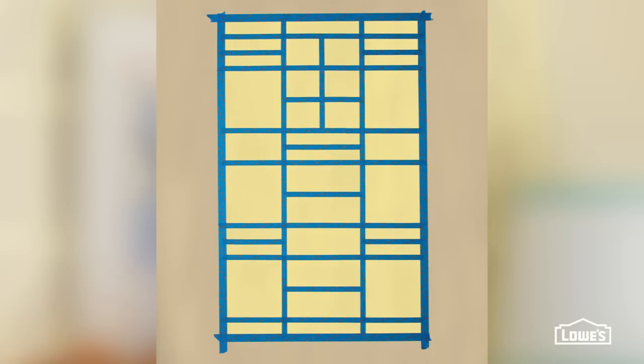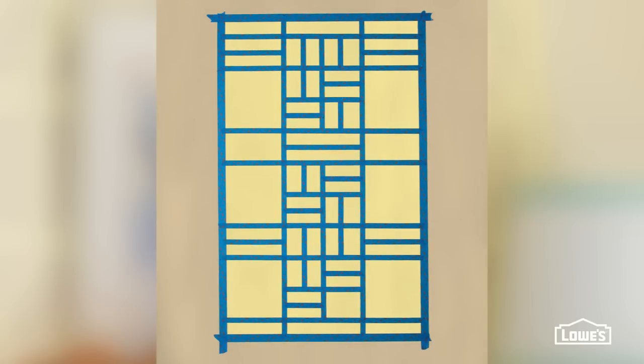Focusing on the center column now, add these two verticals. Then add a series of alternating horizontals and another series of alternating verticals, and that's the final pattern for the center.